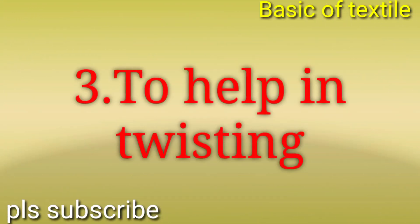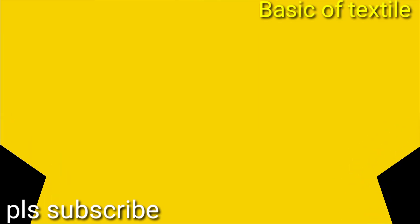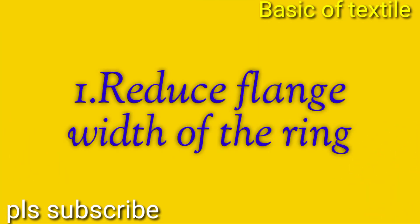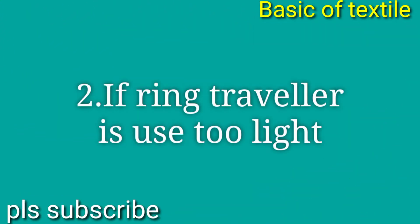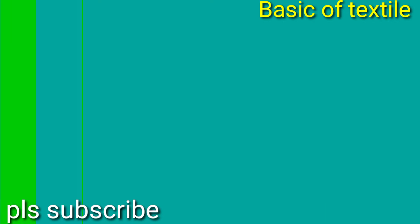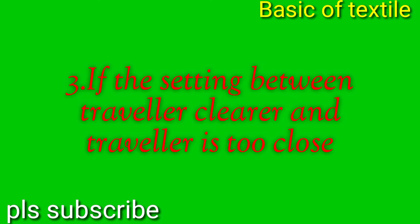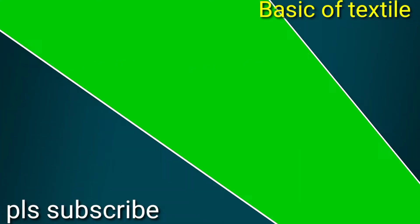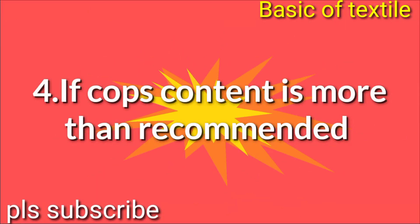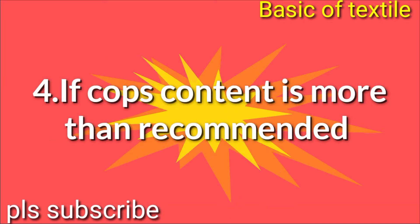Number three, to help in twisting. The main causes of traveller flying are: number one, reduce flange width of the ring; number two, if the ring traveller is too light; number three, if the setting between traveller and ring is too close; number four, if combs content is more than recommended.